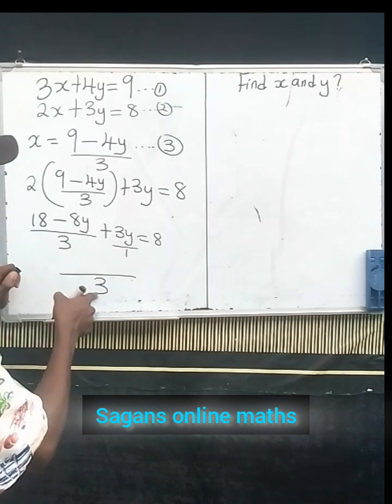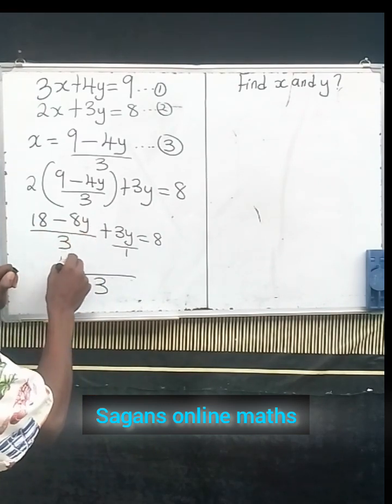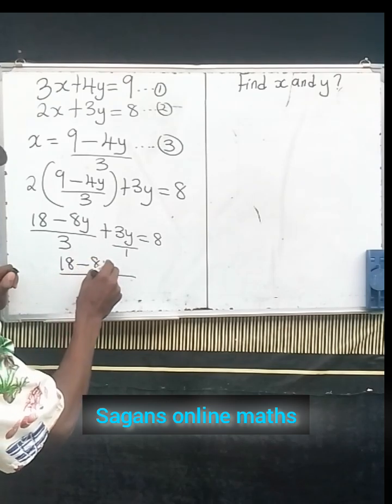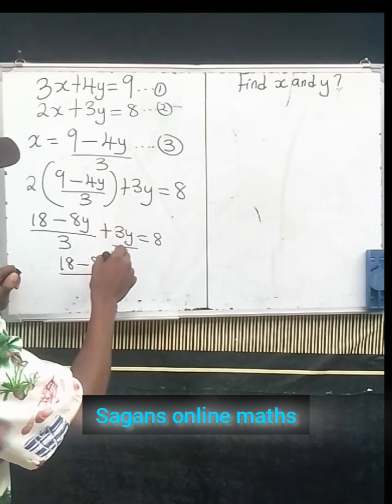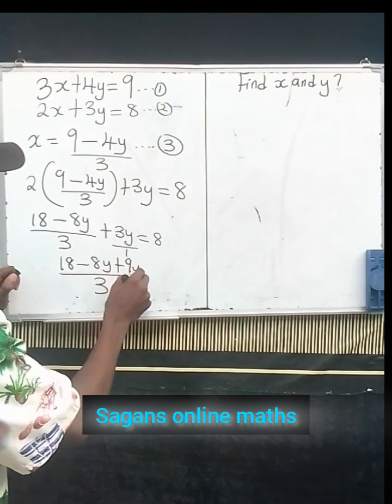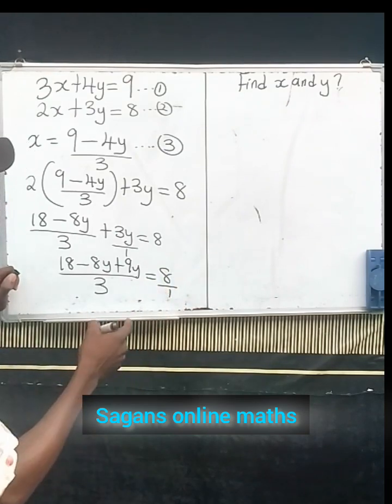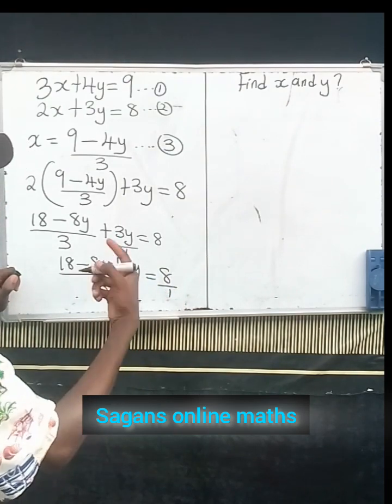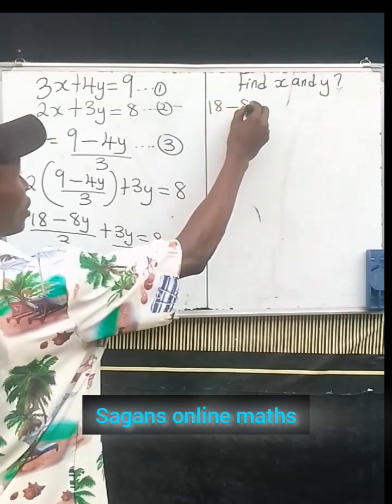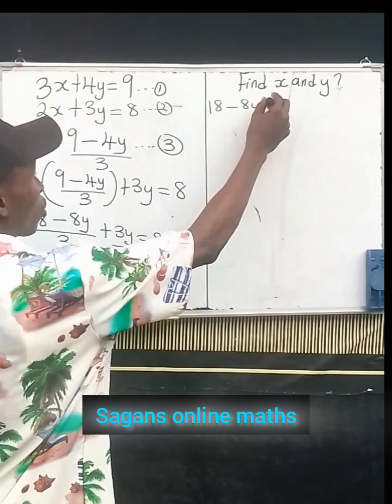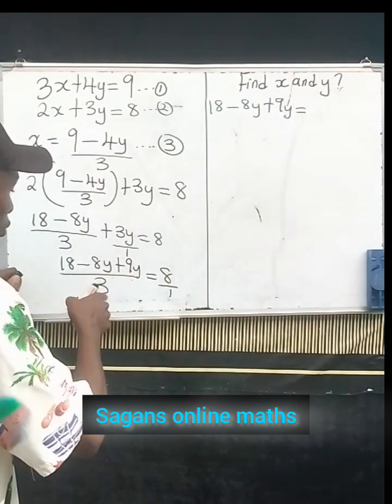So 3 into 1 multiplied by all that is at the numerator gives us 18 - 8y. Then 3 divided by 1 is 3. So 3 times 3y plus 9y equals to 8. There's an invisible 1 here. Let's cross multiply. We multiply by 3, it gives us 18 - 8y + 9y equals to 3 times 8, which gives us 24.